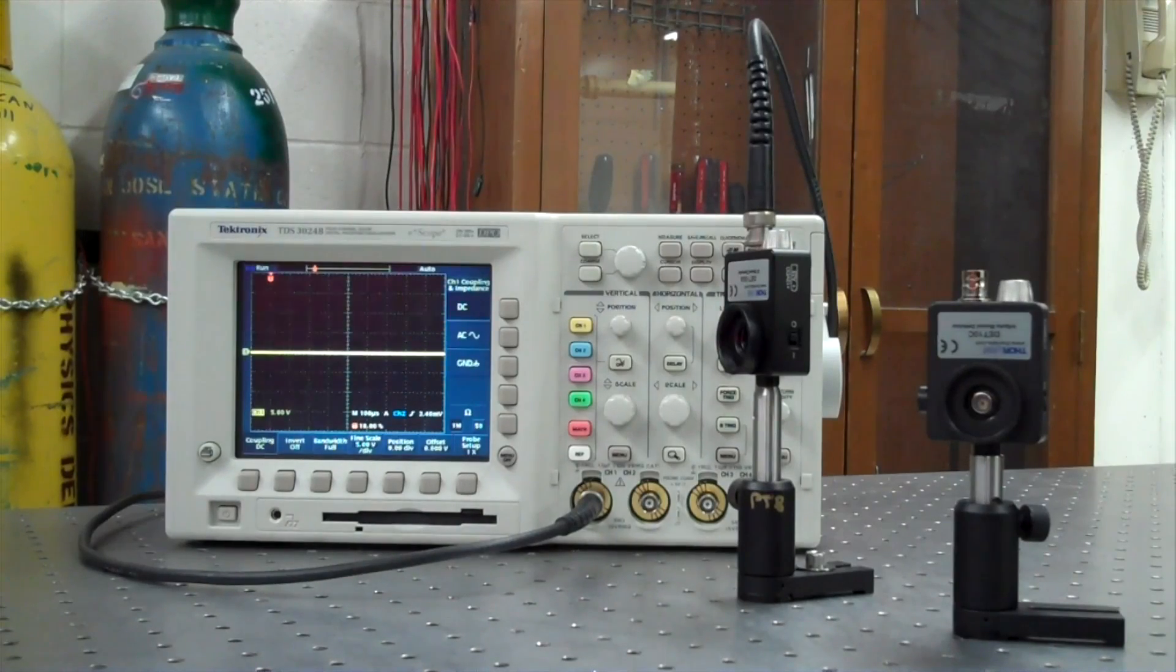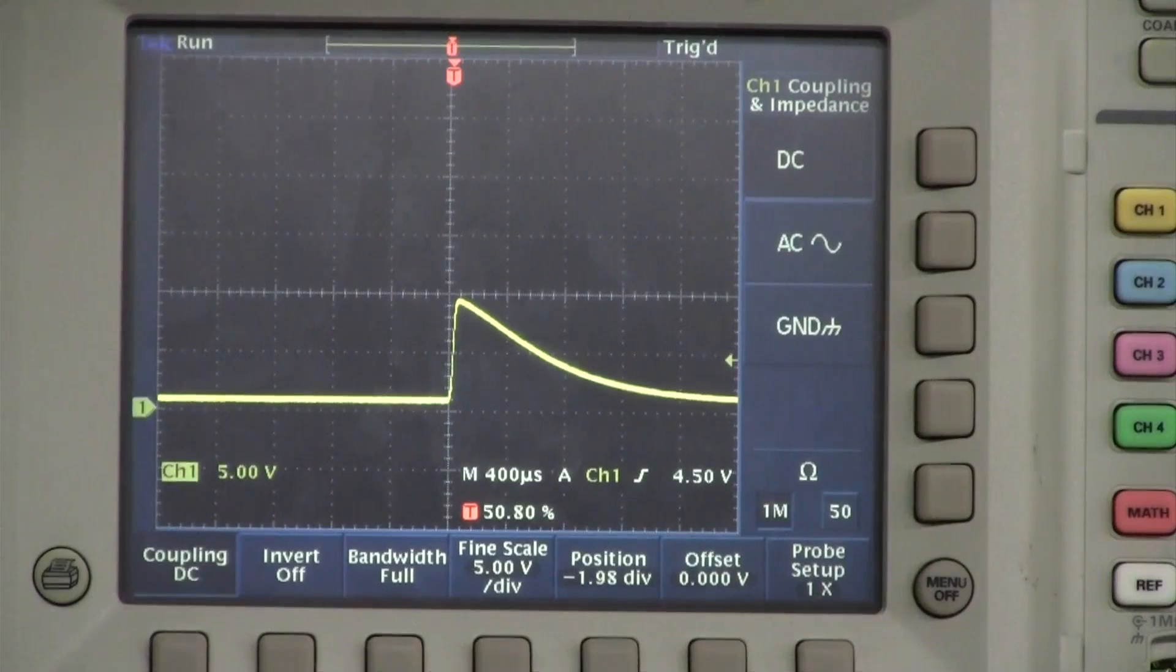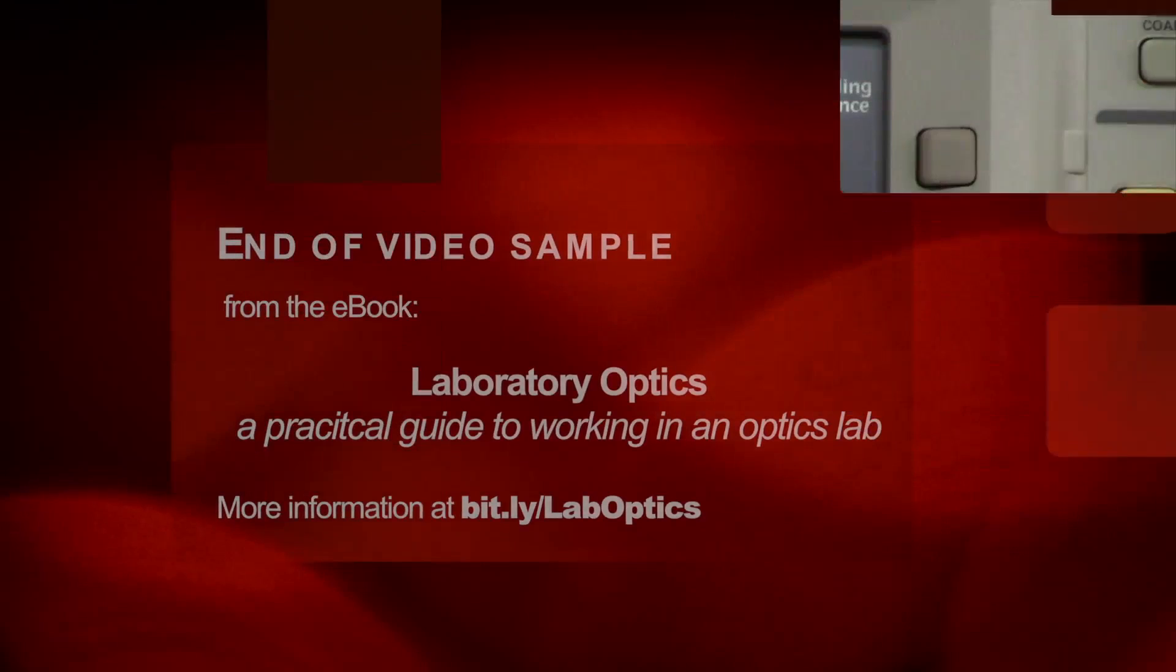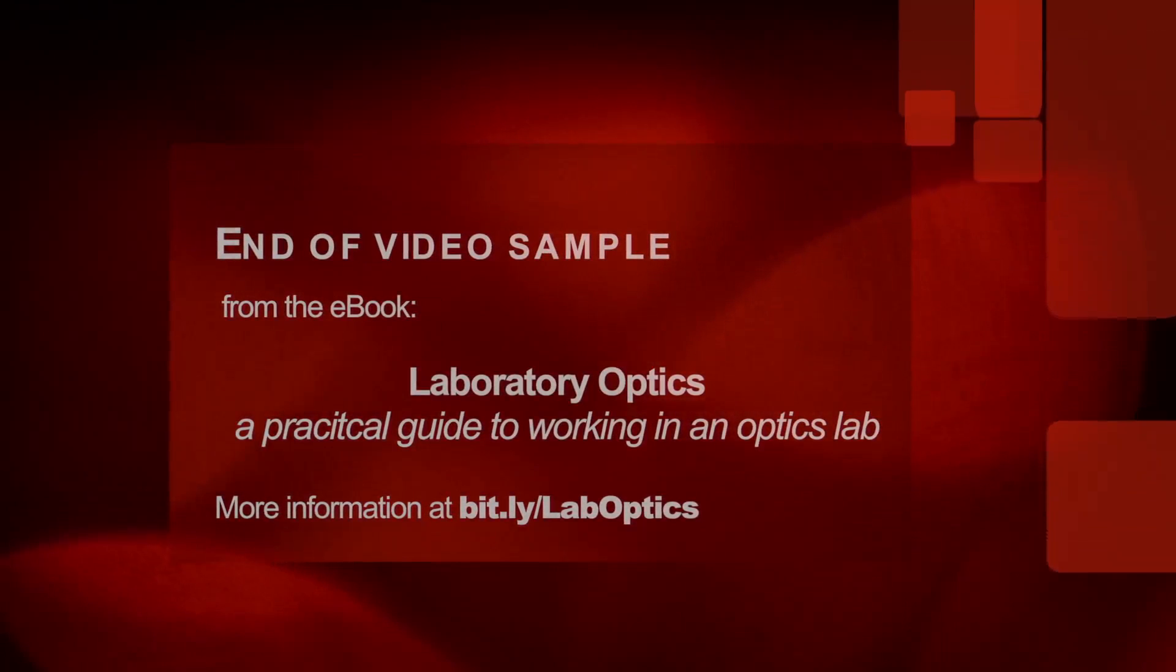Since the photodiode produces a current that's proportional to the incident power, if we connect it to an oscilloscope or other instrument and measure the voltage, we'll get a value that depends on the incident power and the impedance that the photodiode is connected to. Usually, that's the input impedance of the instrument. An oscilloscope with a 1 megaohm input impedance will display a signal that's 20,000 times larger than an...